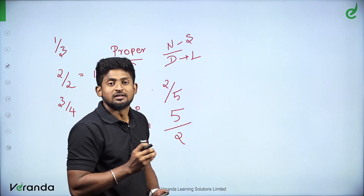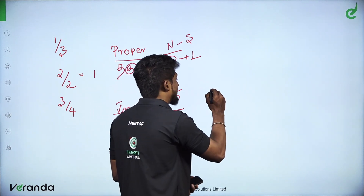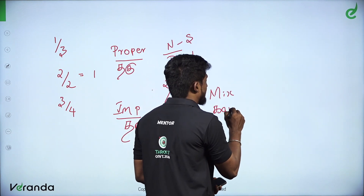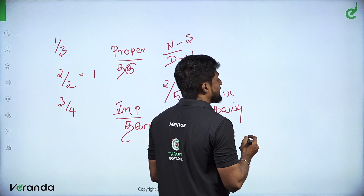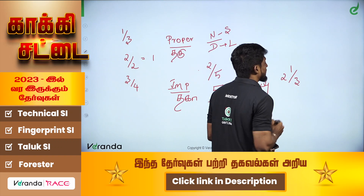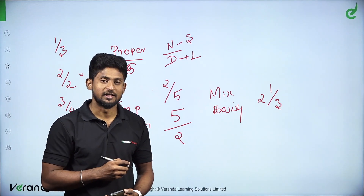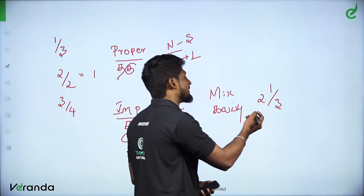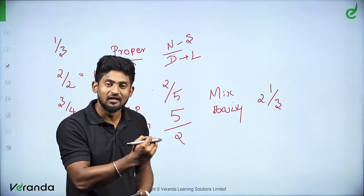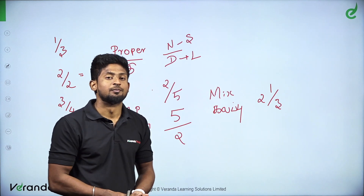This is a mixed fraction. Let's say mixed fraction. What is a mixed fraction? For example, 2 and 1 by 3 — that is a mixed fraction. Now we have all three exact types of fractions: proper fraction, improper fraction, and mixed fraction. We can answer any questions. We can see some details in this class.